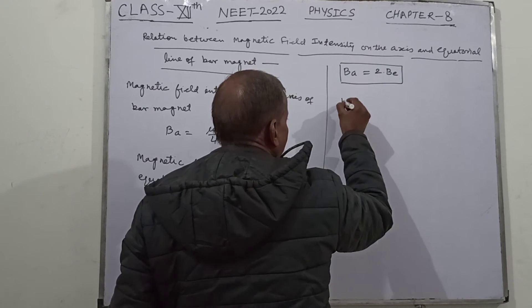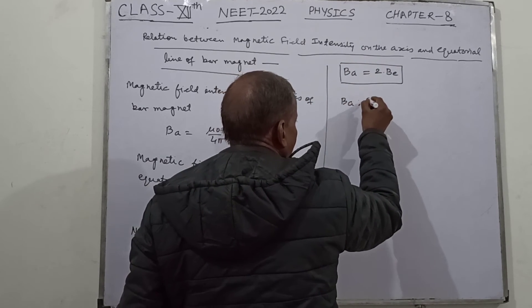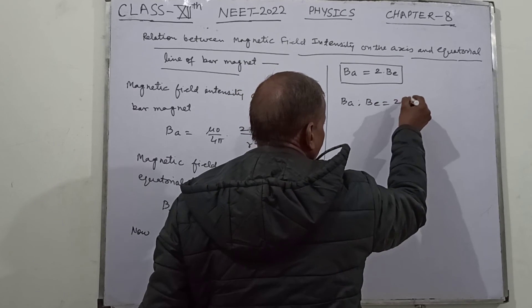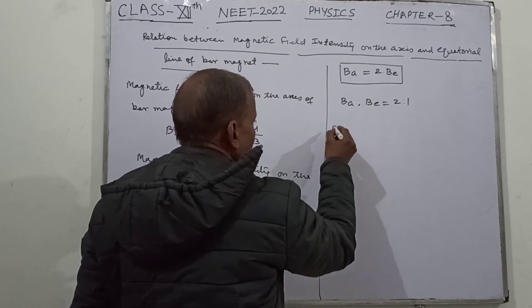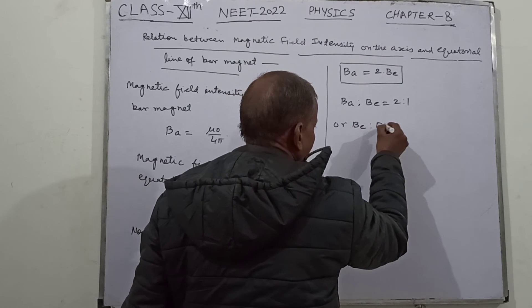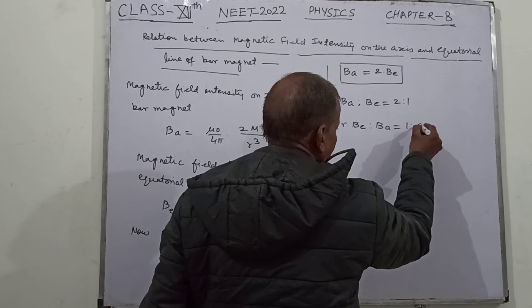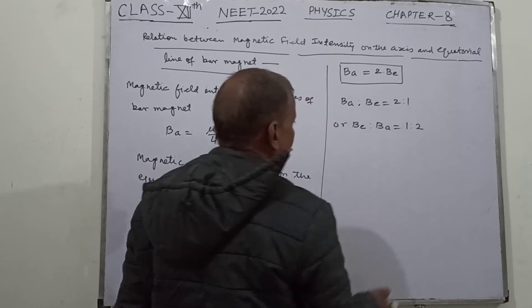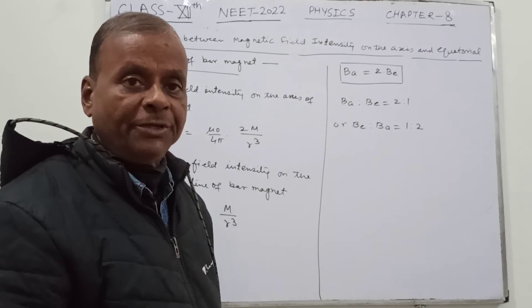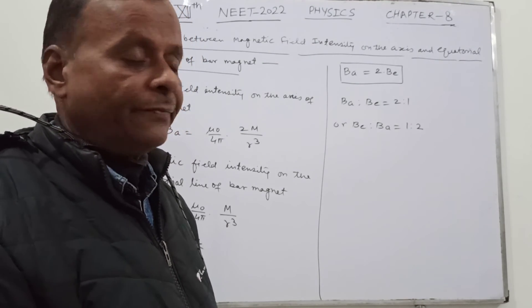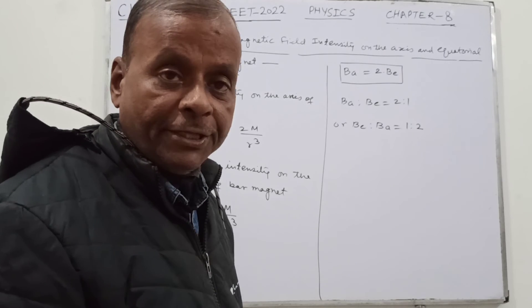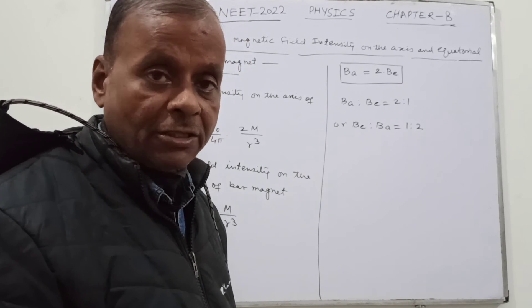In terms of ratio, Ba to Be is 2 ratio 1, and Be to Ba is 1 ratio 2.